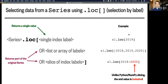But unlike arrays, Pandas also gives us the option to select data by label. And for that, we use dot loc, followed by brackets. And inside the brackets, you can put a single index label. That might be a number, a string, a date time. In this example, I've written s1 dot loc brackets 2019 to select the data value corresponding to the year 2019.